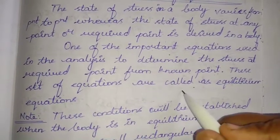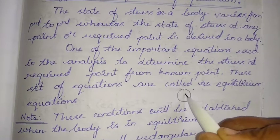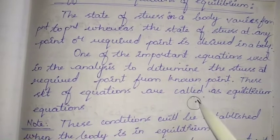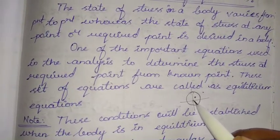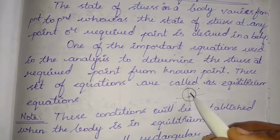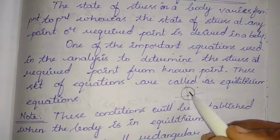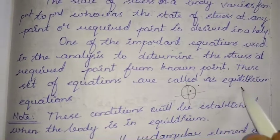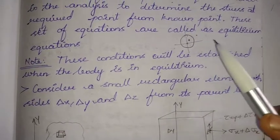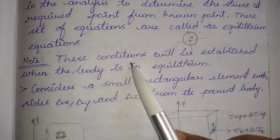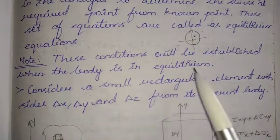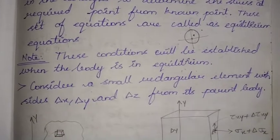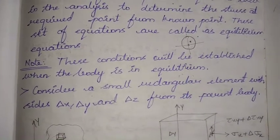We are determining the stress at a required point. If we know the stress at one point, we use certain relations to find the stress at the required point. This set of equations is called equilibrium equations. These conditions are valid only when the body is in equilibrium — only then these equations hold.